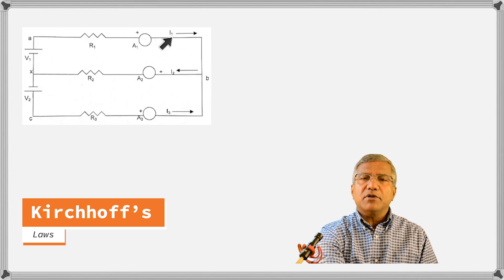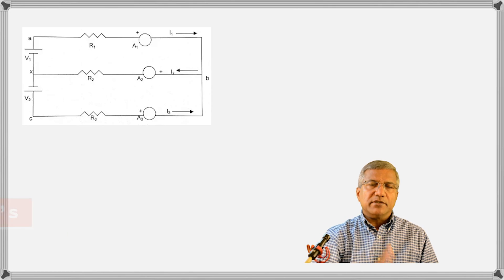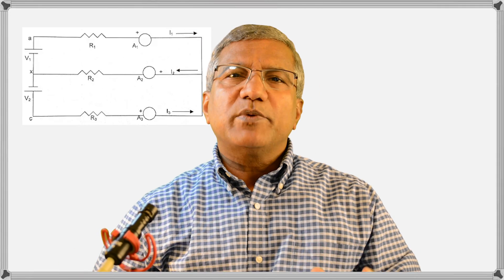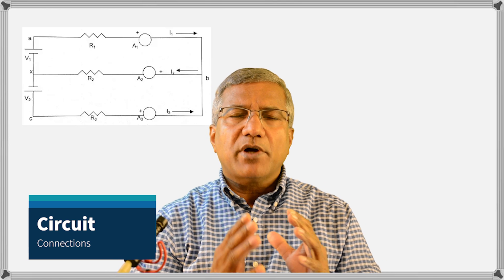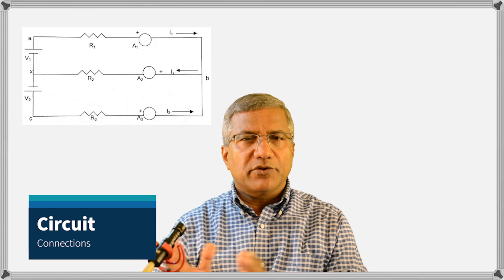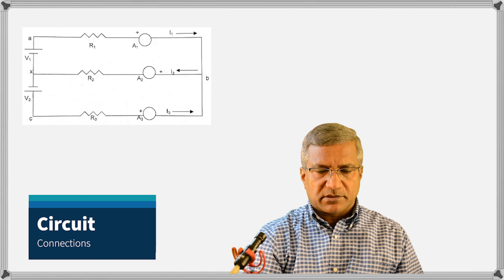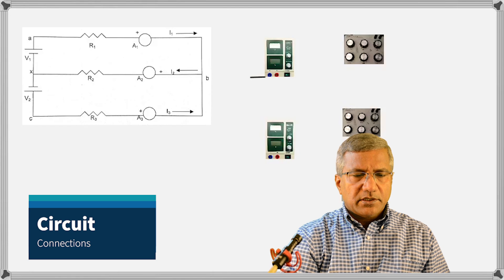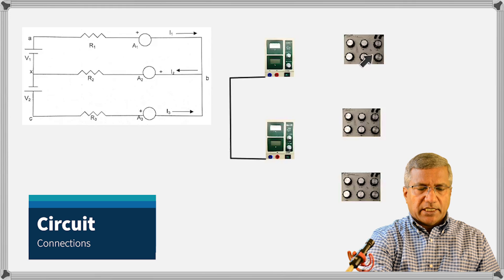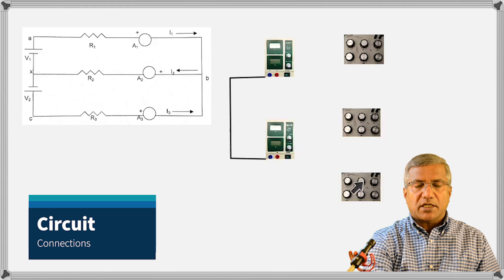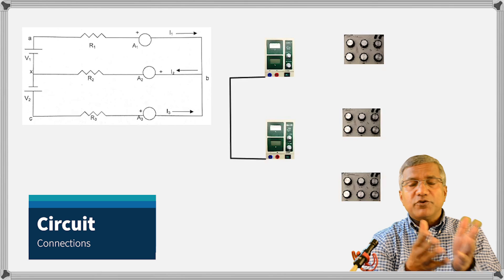We will measure currents I1, I2, and I3 at those points. But before we start measuring, let me show you how we actually connect this in real life. We need two sources and three resistances. Here they are — V1, V2, and the three resistances R1, R2, R3, which are decade boxes where you can set whatever resistance value you want.